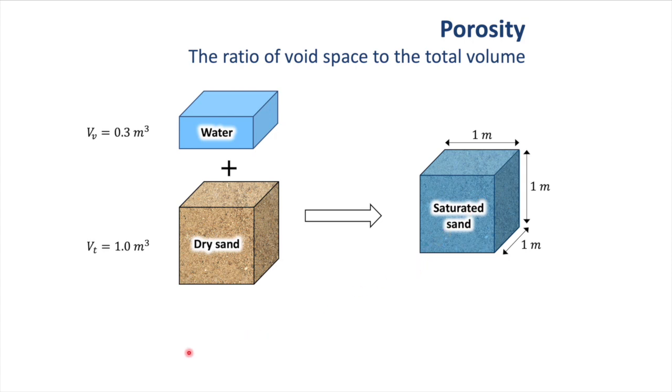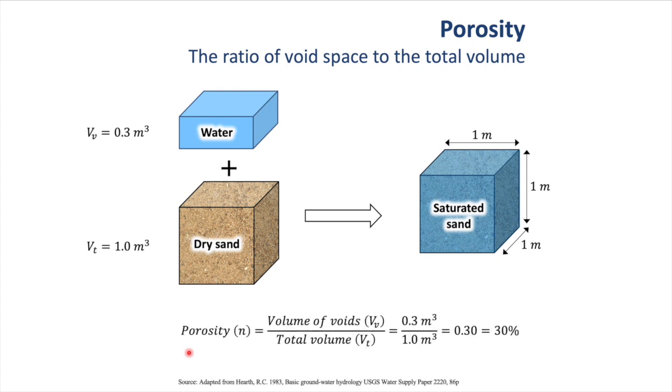Porosity is the ratio of the void space to the total volume. It's normally expressed as little n and we calculate it by dividing the volume of voids, so that's the total volume of water that we've added to our sand, by the total volume. In this case, it would be 0.3 cubic meters divided by 1 cubic meter, which makes 0.3 or 30%.